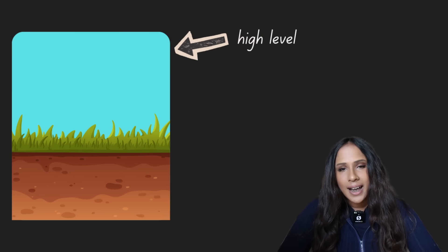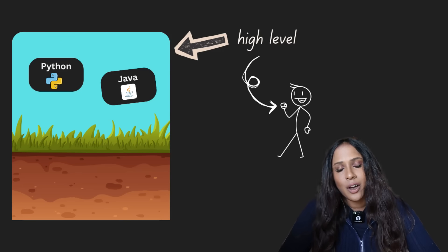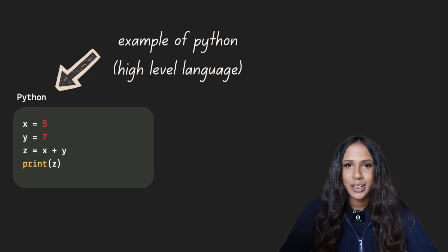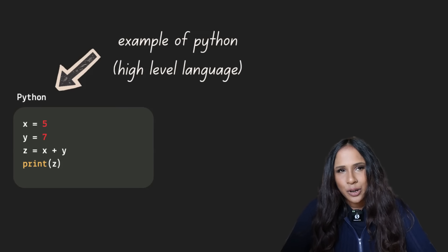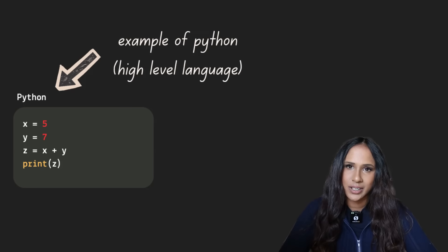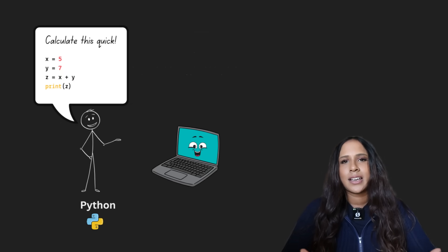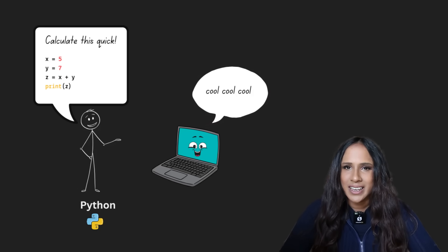Think of it like this. High-level languages like Python, C-sharp, or Java, are designed for humans. They're closer to English, they're easy to read, and they hide all of the messy details of how the computer actually works. They let you say, hey computer, calculate this, without actually worrying about what's under the hood.